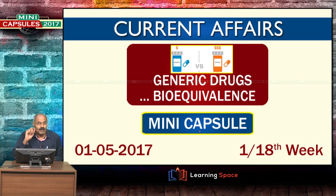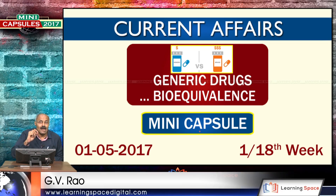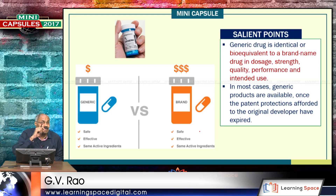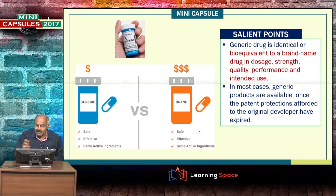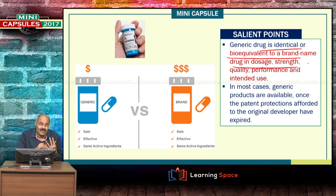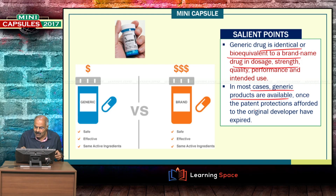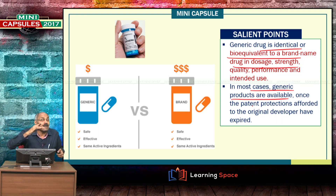Welcome back to Learning Space. We are going to deliberate on the first mini capsule: generic drugs and bioequivalents. A generic drug is identical or bioequivalent to a brand-name drug, not only in dosage, strength, quality, performance, and intended use. In most cases, generic products are available once the patent protections afforded to the original developer have expired, so branded drugs cost a lot more compared to generic drugs.